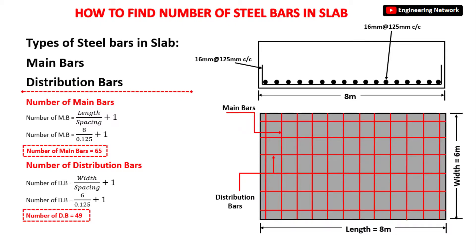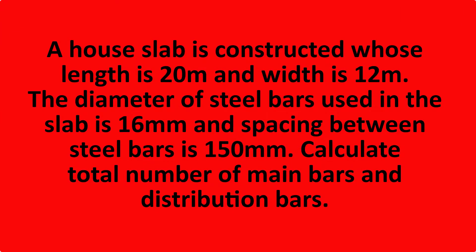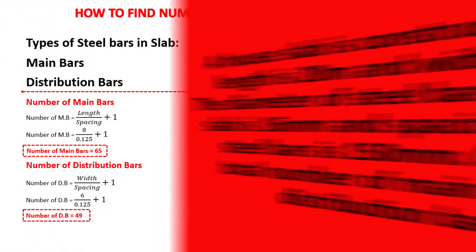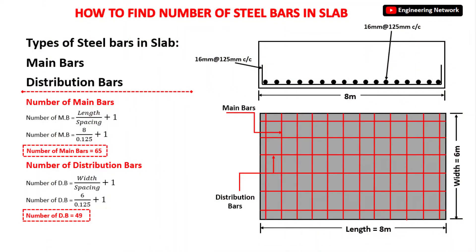Now let me give you a simple homework as well. A house slab is constructed whose length is 20 meters and width is 12 meters. The diameter of steel bars used in the slab is 16 millimeters and spacing between steel bars is 150 millimeters. Calculate the total number of main bars. Please share your answers with me in the comment section.